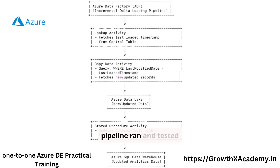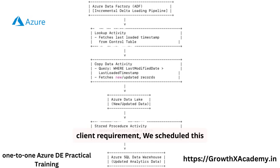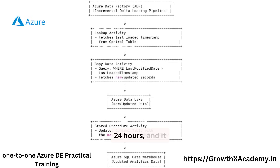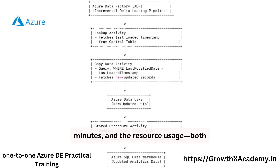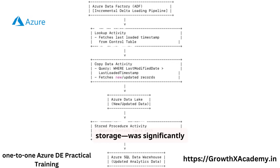Once the pipeline ran and tested successfully, as per client requirement, we scheduled it to run every 24 hours, capturing all the new and updated records daily. It brought down our data loading time from hours to minutes, and the resource usage — both compute and storage — was significantly optimized.